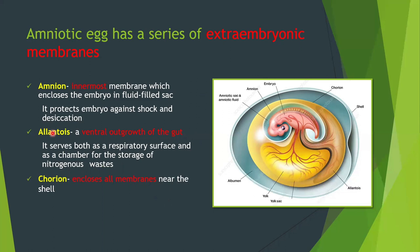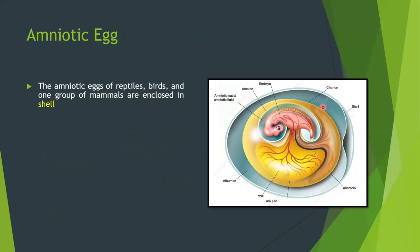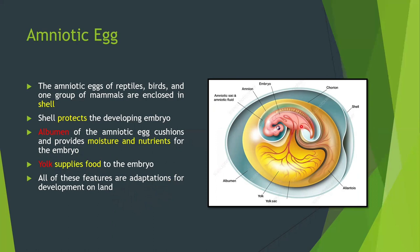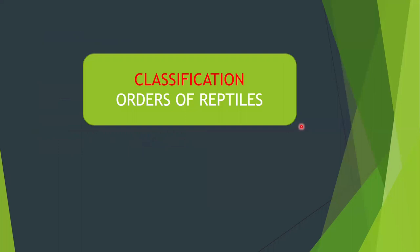The chorion encloses all the membranes near the shell; it is highly vascularized and aids in gaseous exchange. The shell protects the embryo. Albumin cushions and provides moisture and nutrients for the embryo. The yolk supplies the embryo with food. All these features are adaptations for development on land.